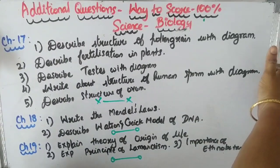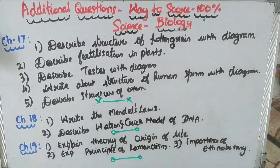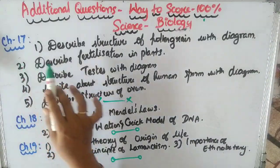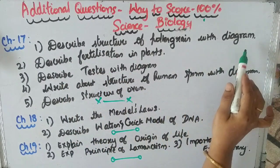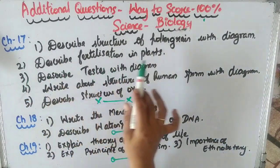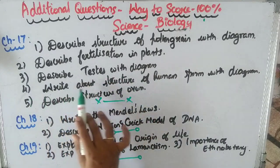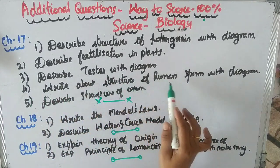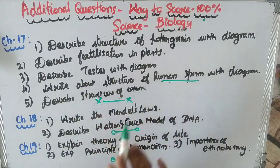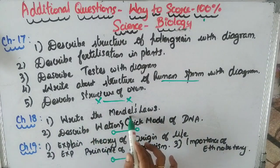Chapter 17: Question 1: Describe the structure of pollen grain with a diagram. Question 2: Describe fertilization in plants. Question 3: Describe the testes with a diagram. Question 4: Write about the structure of human sperm with a diagram.